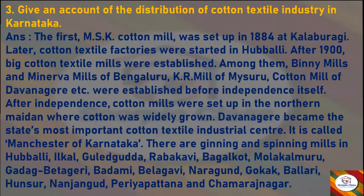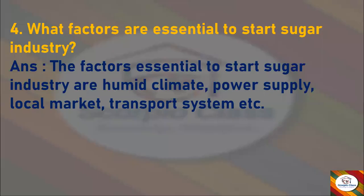Next question: What factors are essential to start a sugar industry? Answer: The factors essential to start a sugar industry are humid climate, power supply, local market, transport system, etc.